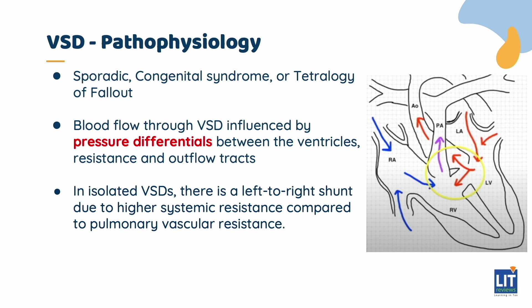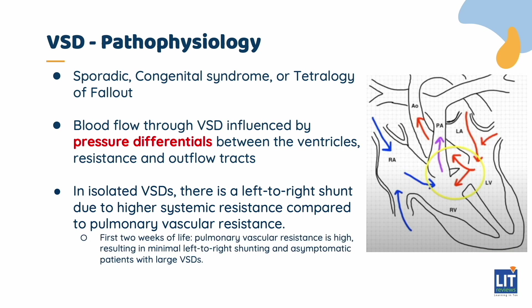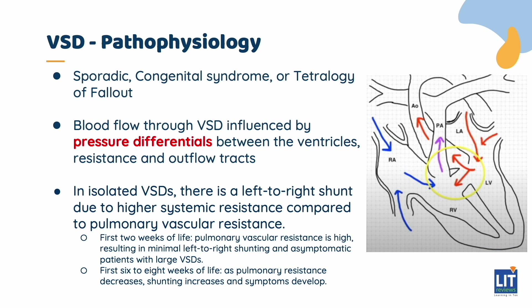In the absence of other defects, systemic resistance is much higher than pulmonary vascular resistance, causing the left-to-right shunt seen in isolated VSDs. The lungs become over-circulated, leading to symptoms as the disease progresses. During the first two weeks of life, pulmonary vascular resistance remains high, keeping shunting to a minimum and allowing patients with large VSDs to be asymptomatic. However, as pulmonary resistance decreases over the first six to eight weeks, shunting increases and symptoms develop.